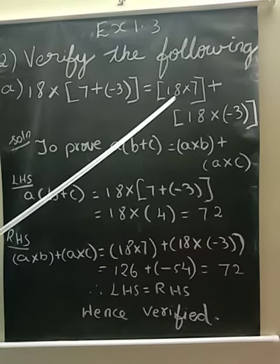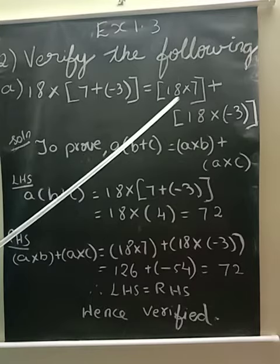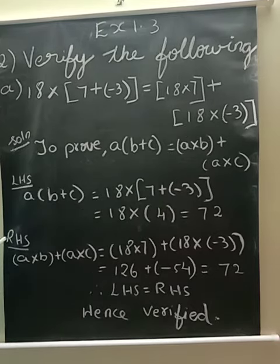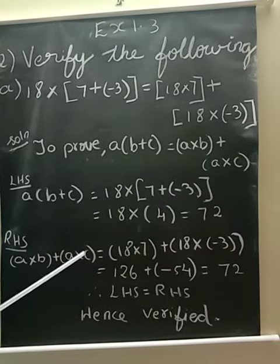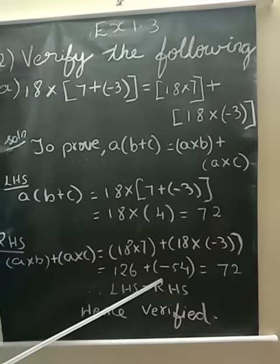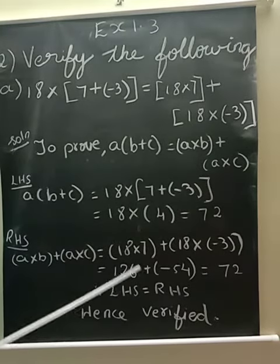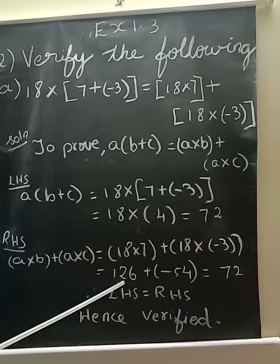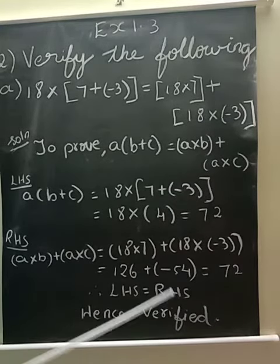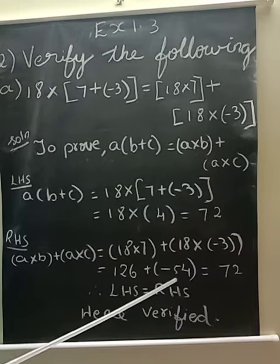Next, coming to the right-hand side. What is right-hand side? 18 multiplied by 7 plus 18 multiplied by minus 3. So 18 multiplied by 7 plus 18 multiplied by minus 3. What is 18 multiplied by 3? 54.